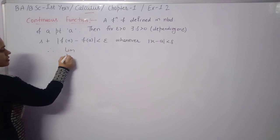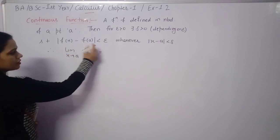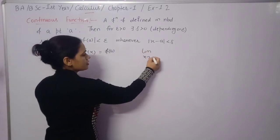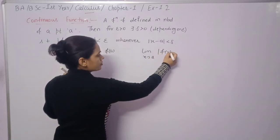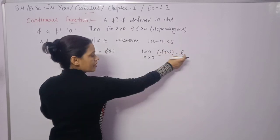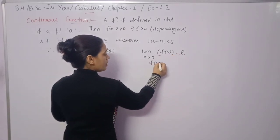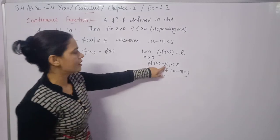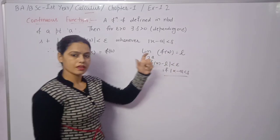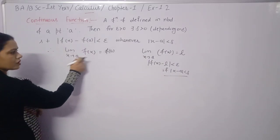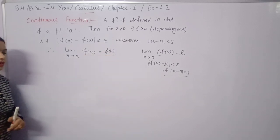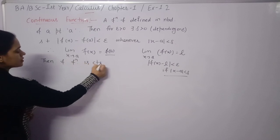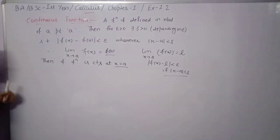That means you can write: limit x tends to a, f(x) = f(a). In a limit, if you apply limit x→a of f(x) and get some number L, that L is our limit. For limit: |f(x) − L| < epsilon if |x − a| < delta. For continuity, when you put x = a into the function, the value should equal f(a). Then function f is continuous at x = a.